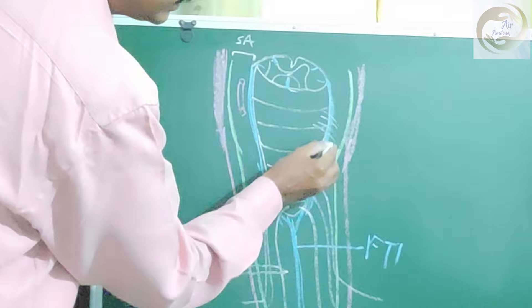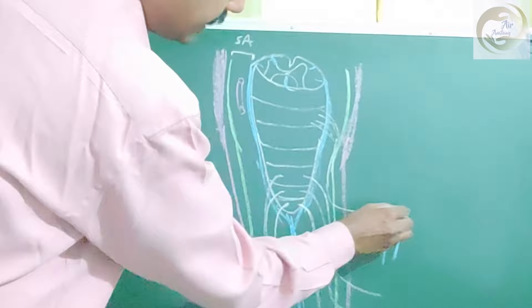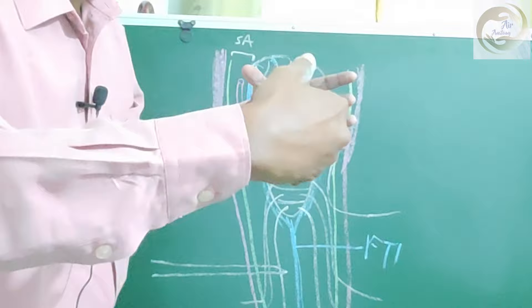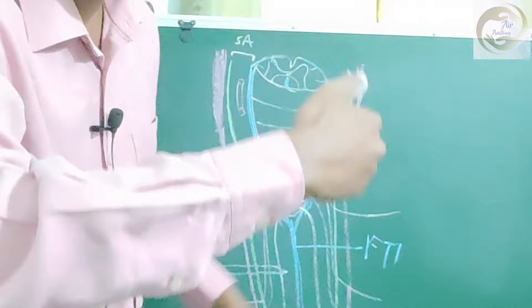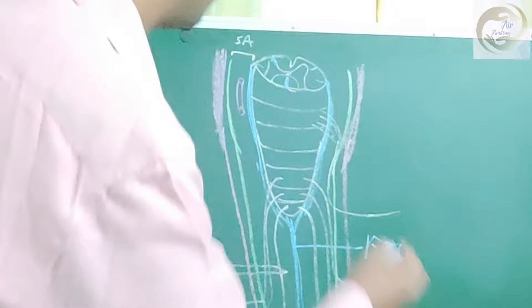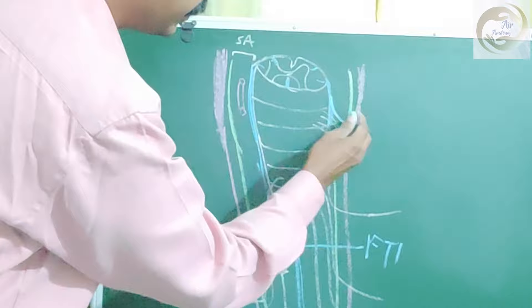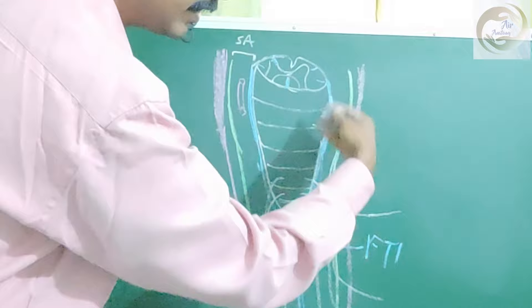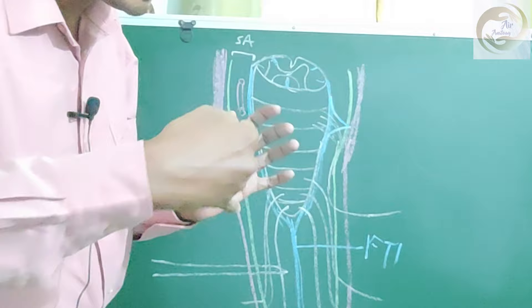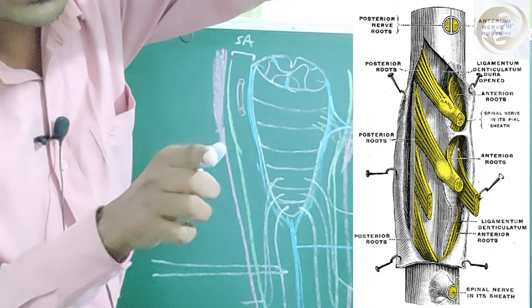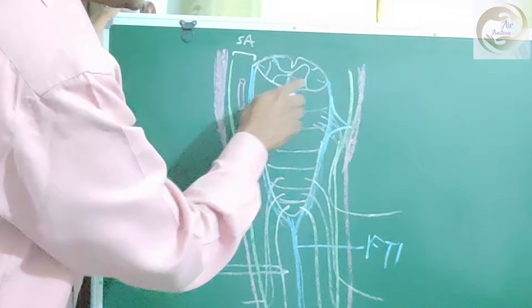If you take one spinal segment, it will not give off a single root but multiple nerve rootlets. These nerve rootlets join to form the spinal nerve that exits at a lower level. Between the posterior nerve rootlets and the anterior nerve rootlets, there is another pia modification called the ligamentum denticulatum. It is a toothed process — that is why it is called the denticulate ligament. The toothed processes of the ligamentum denticulatum lie between the posterior and anterior nerve rootlets. These toothed processes pierce the arachnoid and anchor onto the dura.